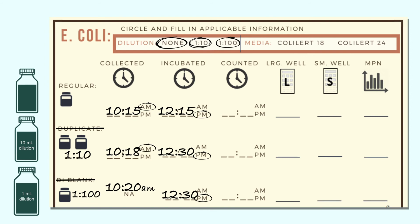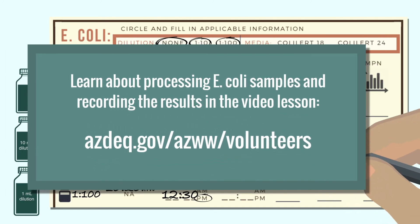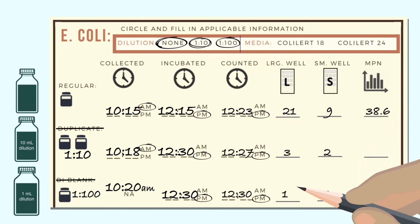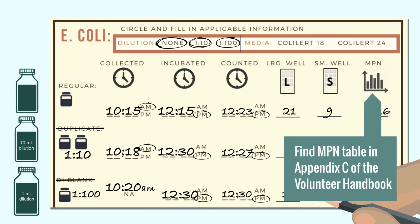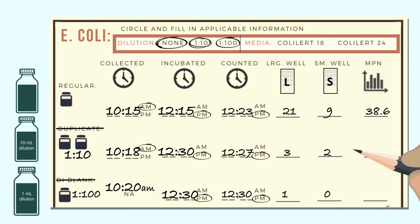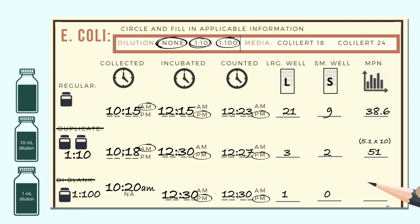After the incubation period, following the steps from Collecting and Processing Water Samples for E. coli, record the number of large cells and small cells for each sample and use the MPN calculator from the Volunteer Handbook's Appendix C to determine the number to record for Regular. For the 1 to 10 row, multiply its MPN table number by 10. And for the 1 to 100 row, multiply the MPN number by 100.